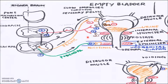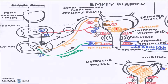Before we learn about the micturition process, you have to know what organs or structures are involved in this process. The first part is the kidney, which looks like a red bean. The urine is passed through a muscular tract called the ureter into the bladder, where it is stored. If you want to eliminate it from the body, it will pass through the urethra to the outside.